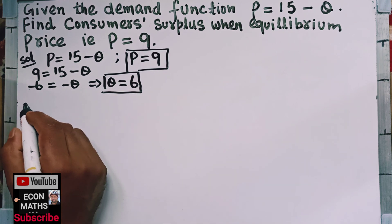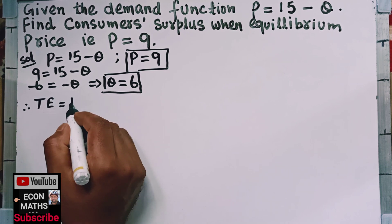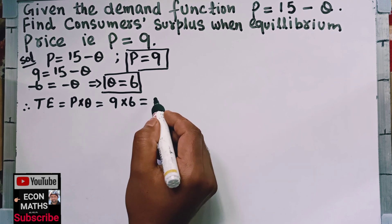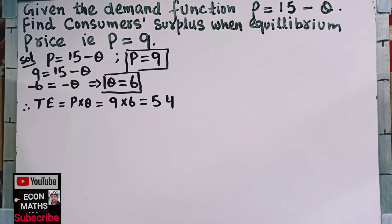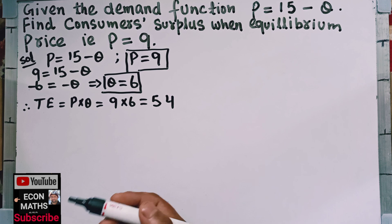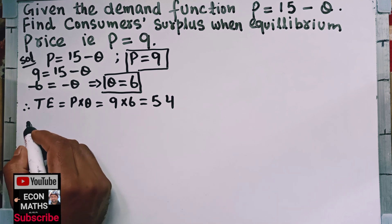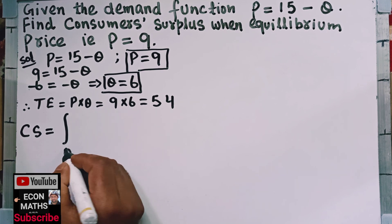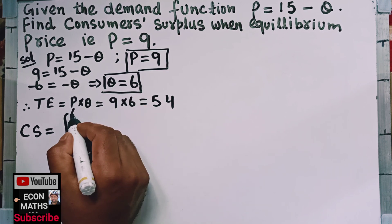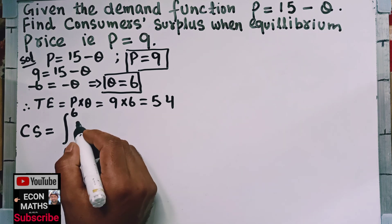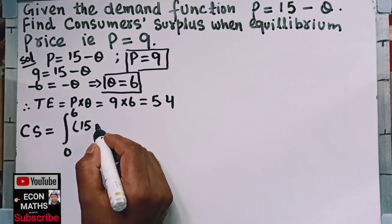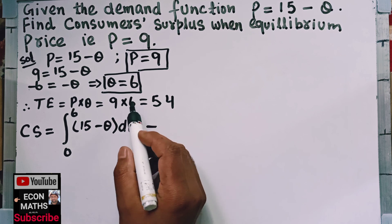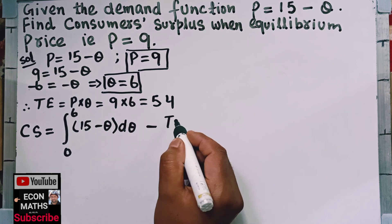Therefore, total expenditure is equal to price into quantity, that is 9 into 6, which equals 54. Now, the formula for the consumer surplus, which we have seen in earlier videos, is: consumer surplus is equal to the definite integral from 0 to the equilibrium quantity, that is 6, of the demand function, that is 15 minus Q, with respect to quantity, minus the total expenditure.